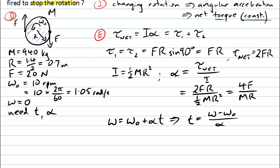And that tells us that in fact our angular acceleration must indeed be a negative quantity. The direction of the angular acceleration is in the opposite direction to the direction of our initial angular velocity.